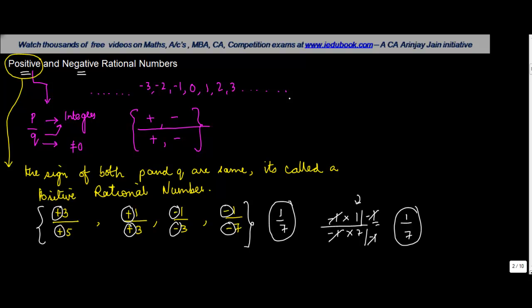Whereas, what we see is that in case P and Q have different sign, let's say you have 3 upon minus 5 or you have minus 5 upon 3. In both these cases, the numerator in this case is positive, here it is negative. Here it is plus, here is it minus.